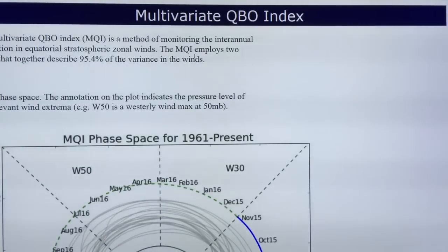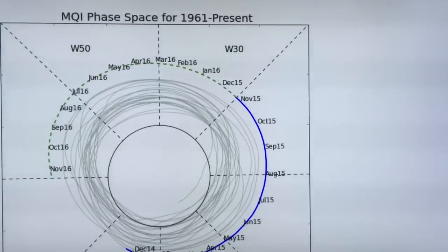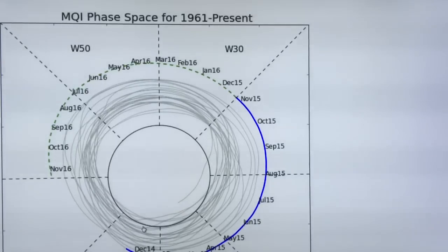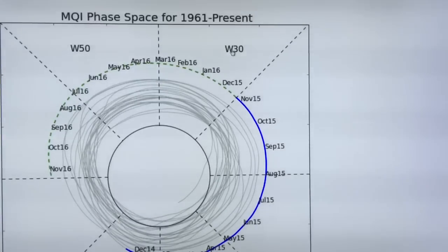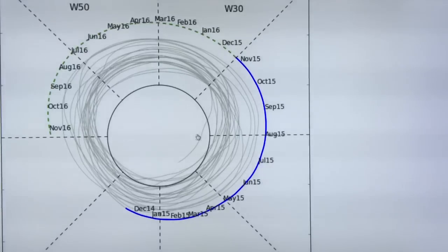The QBO is a way of monitoring the equatorial stratospheric zonal winds — west to east and east to west. As you go through from December 2014 to December 2015, that's about half a cycle, and another year takes you around — which is why it's called Quasi-Biannual Oscillation. You get a change in the direction of the wind: the wind maximum is in a westerly direction at 30 millibar, then westerly at 50 millibar, and as you go to different times of the year it goes easterly — so the wind direction switches in the stratosphere at the equator. This plot was generated in November 2015 and projected the QBO would just continue along as normal.